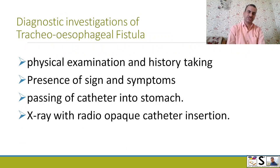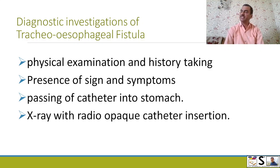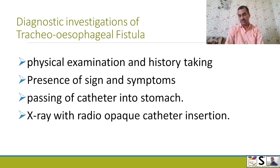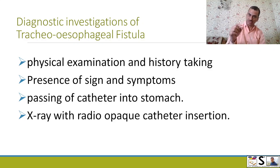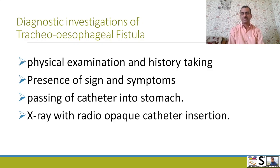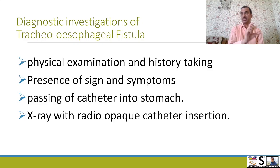Now, diagnostic investigations — how will you identify TEO fistula? Number one: physical examination and history taking. When we complete this process properly, we can suspect TEO fistula and check for other signs and symptoms. For confirmation, we pass a rubber catheter into the stomach; if it blocks at some distance, it means there is atresia. We may also take an X-ray using an opaque catheter insertion to clearly see where it is stopping.